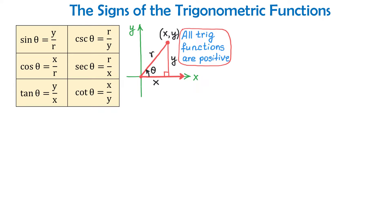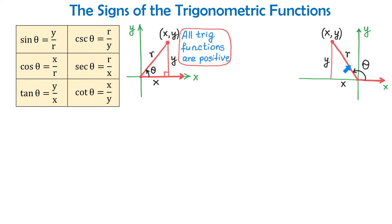Let's draw an angle in quadrant 2. Here we have a point in quadrant 2 and angle theta whose terminal side passes through this point. In this quadrant, x is negative, y is positive, and r is always positive. I will write a minus above x and a plus above y to remember that in this quadrant x is negative and y is positive. I will also have a plus above r. Sine of angle theta is y over r, and because both of them are positive, sine will be positive, so sine in this quadrant is positive.